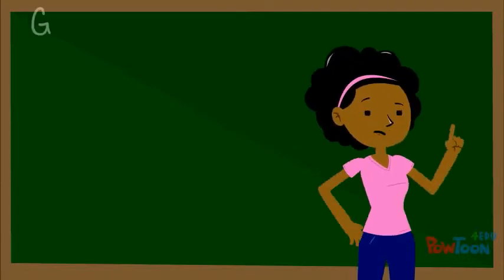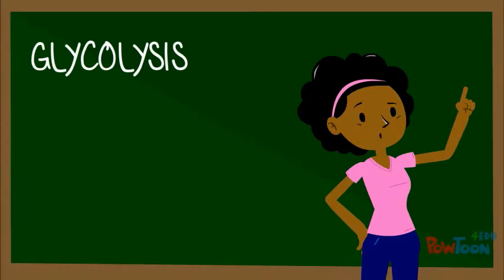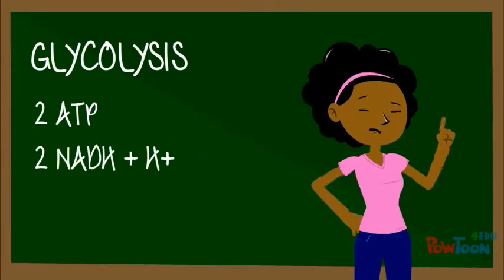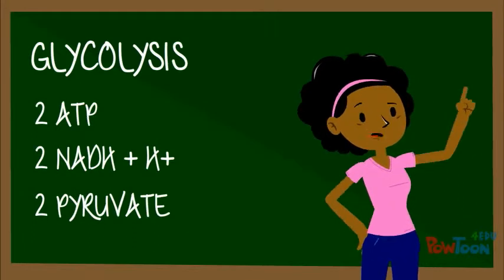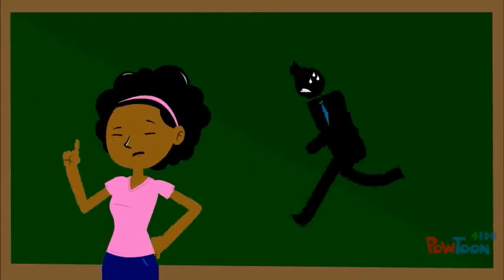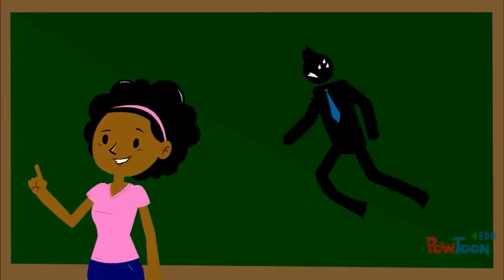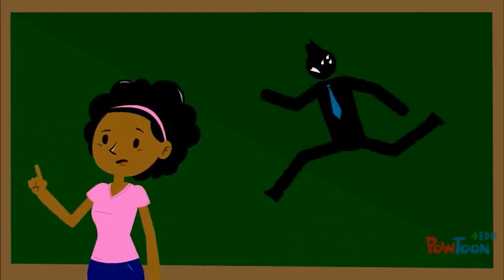Last time we spoke about glycolysis, an anaerobic pathway that resulted in a net gain of 2 ATP, 2 NADH plus H pluses, and the formation of 2 pyruvate. Even though we get quick bursts of energy from this system, this anaerobic pathway is unable to keep up with the amount of ATP needed for long bouts of exercise.